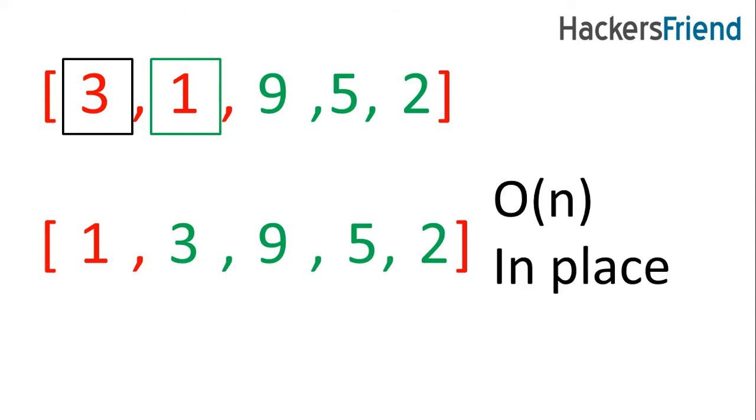Moving ahead, this solution is order of n. As you can see we have iterated through the array only once, and since we don't need any extra space to do that except one extra variable, this is an in-place algorithm.